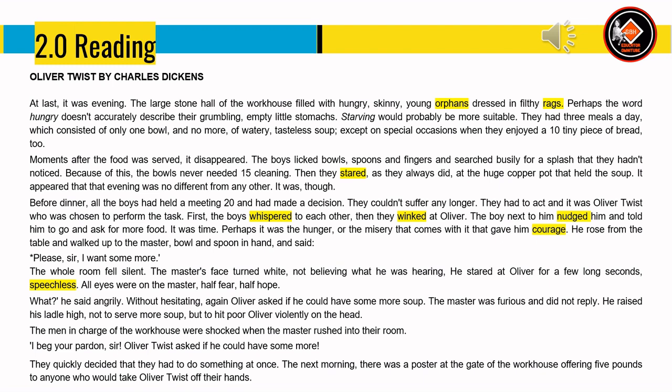Oliver Twist by Charles Dickens. At last, it was evening. The large stone hall of the workhouse filled with hungry, skinny, young orphans dressed in filthy rags. Starving would probably be more suitable than hungry to describe their empty little stomachs. They had three meals a day, consisting of only one bowl of watery, tasteless soup, except on special occasions when they enjoyed a tiny piece of bread too. Moments after the food was served, it disappeared. The boys licked bowls, spoons and fingers, searching for every drop. The bowls never needed cleaning. Then they stared at the huge copper pot that held the soup.